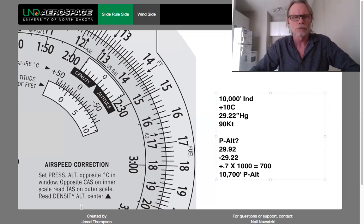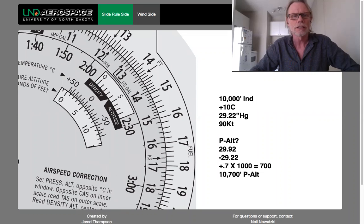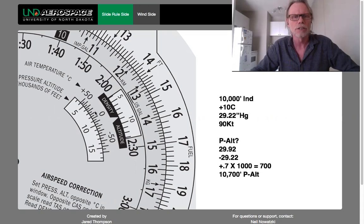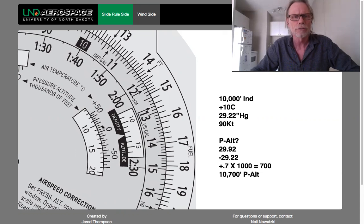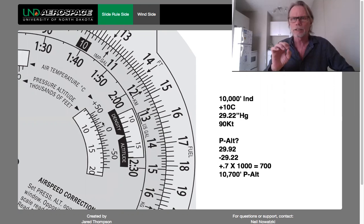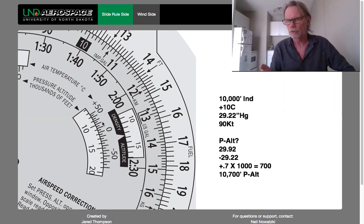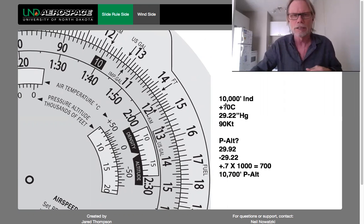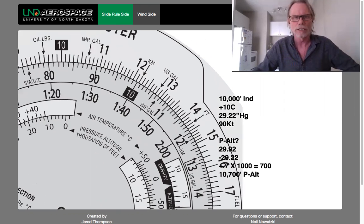So we put 10,700 feet in the window opposite plus 10 degrees Celsius. I'll move it around so you can see — here's 10,000, and 10,700 would be roughly two-thirds of the way between 10,000 and 11,000. To the left of zero are the plus values, so there's plus 10 degrees. Setting 10,700 feet opposite plus 10 degrees Celsius — we've now calibrated our E6B based on pressure altitude and temperature. Now for indicating 90 knots, we find 90 knots on the inner window and you can see it reads 109 knots true airspeed.